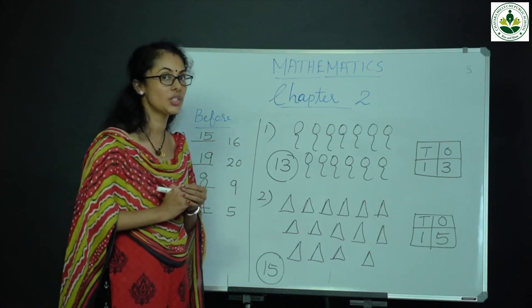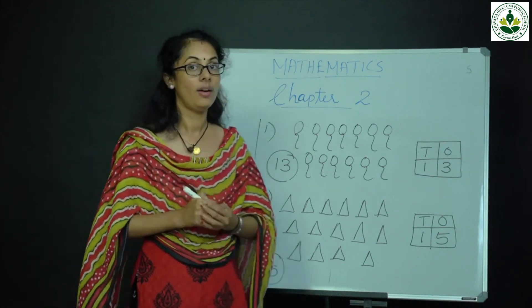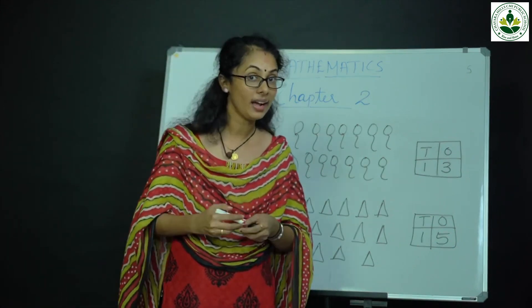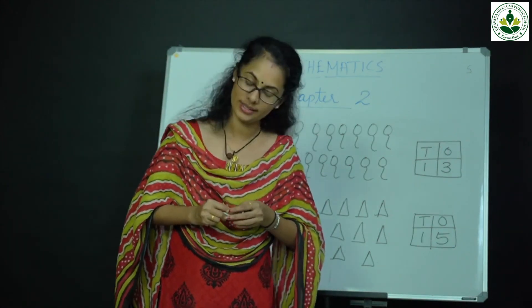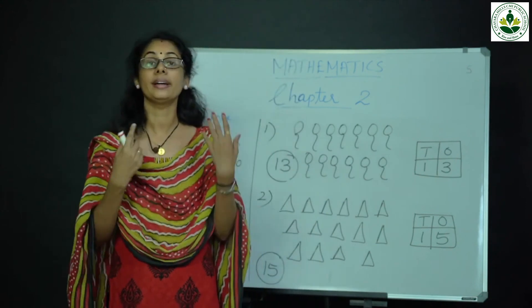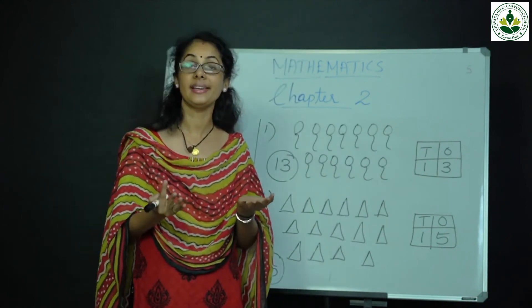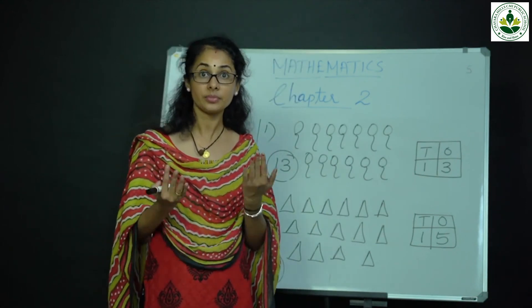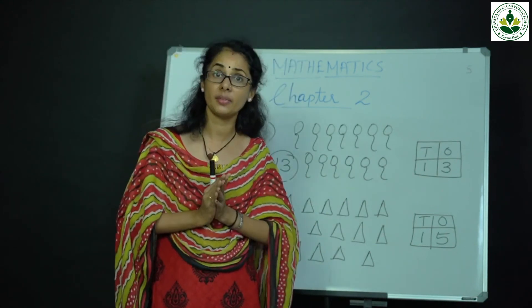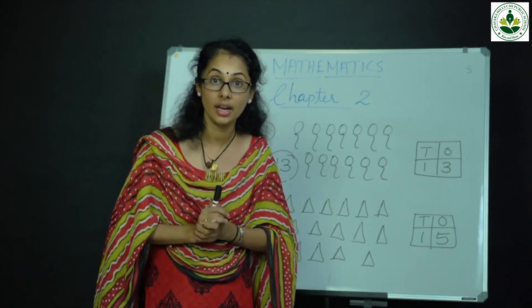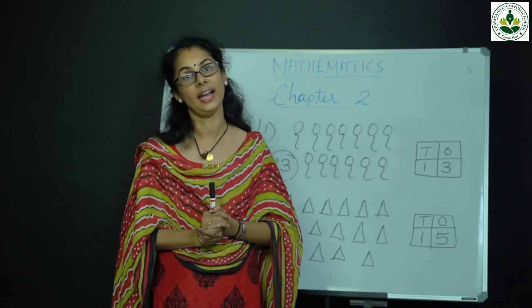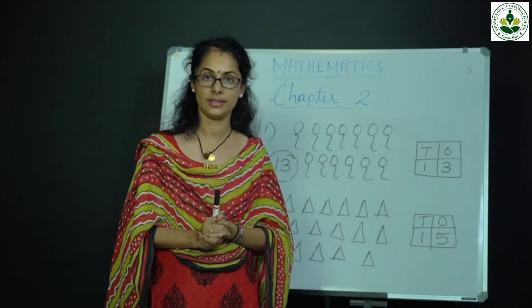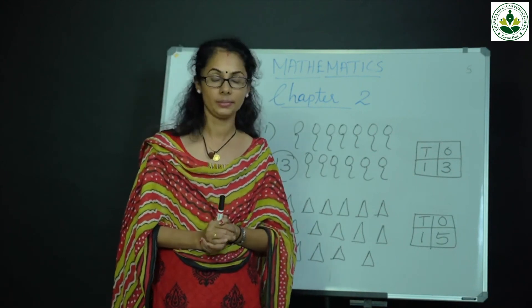How many tens and ones in 12? 1 ten and 2 ones. Then how many tens and ones in 19? One ten and nine ones. Thank you.